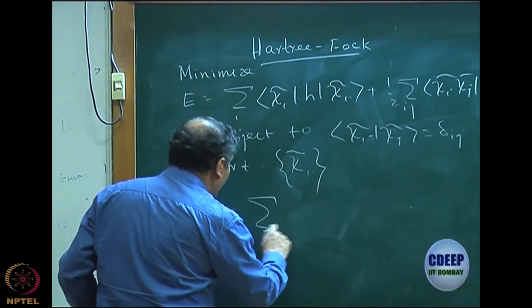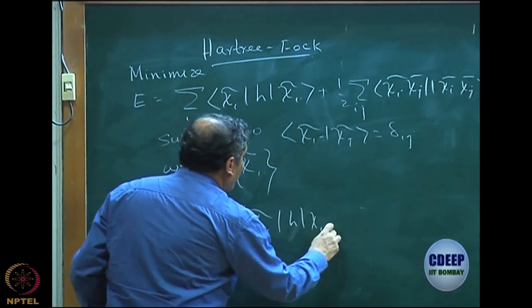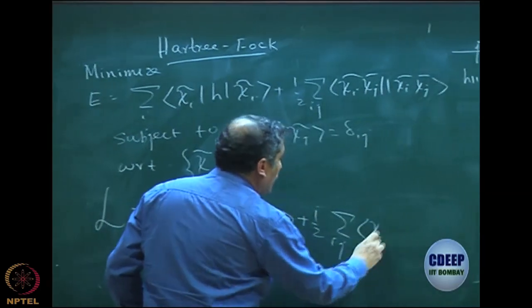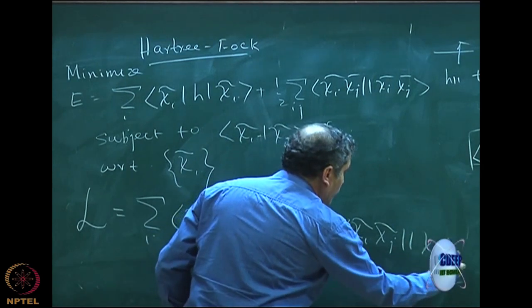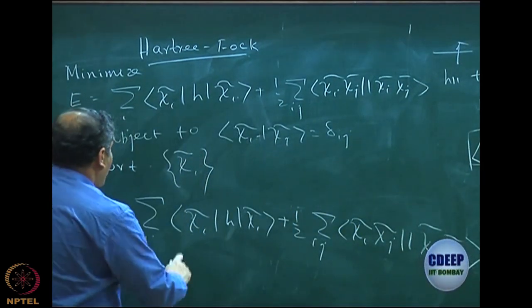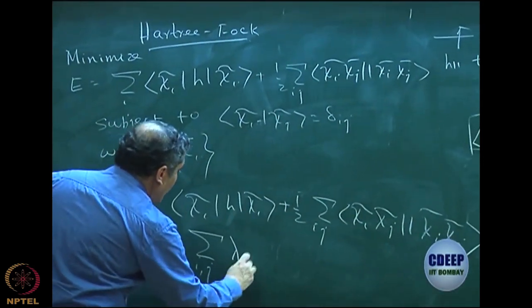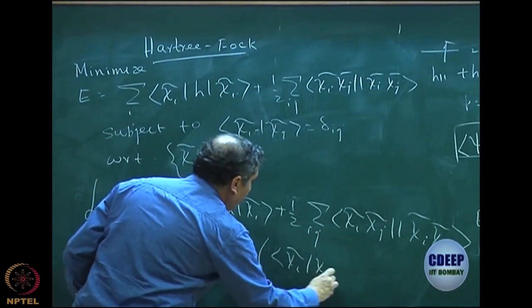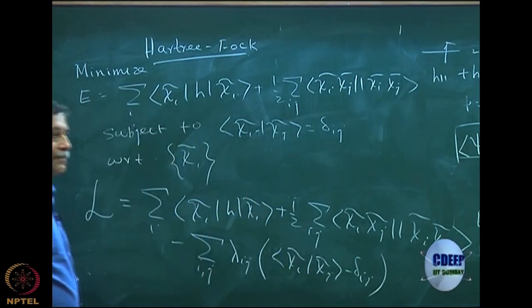So, my Lagrangian then becomes sum over i chi i tilde h chi i tilde plus half of i j. I am going to come back in the next class and expand this anti-symmetrized. Eventually, I have to expand this of course. Right now, let me write it in a simple form minus sum over i j lambda i j chi i tilde chi j tilde minus delta i j, correct? That becomes my Lagrangian.